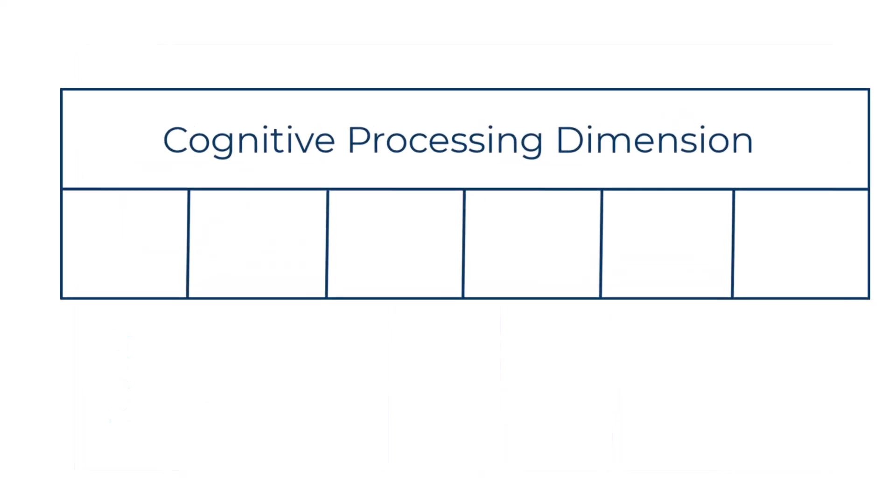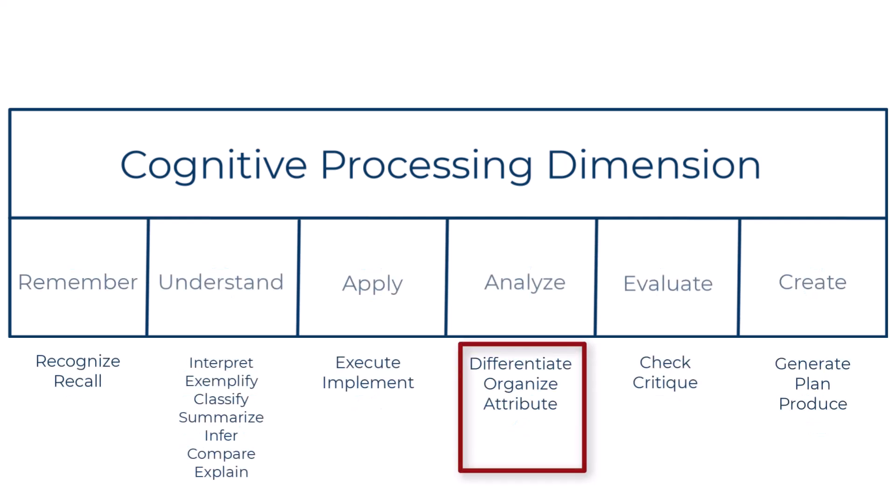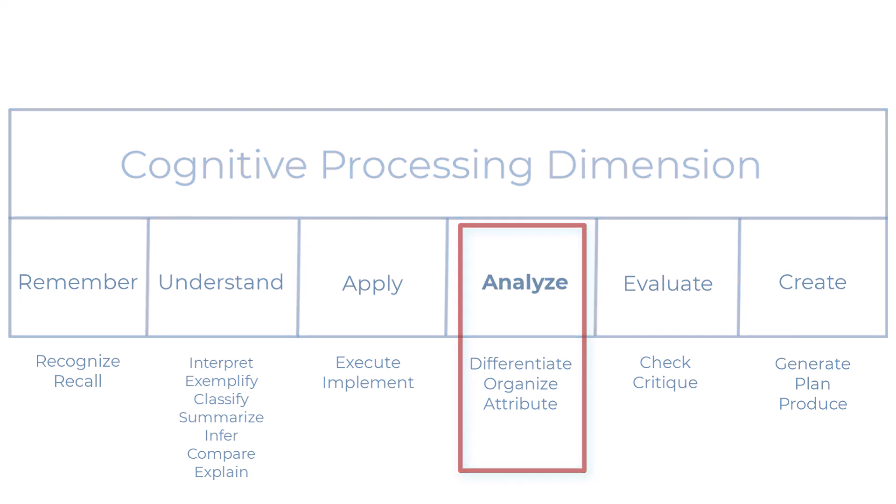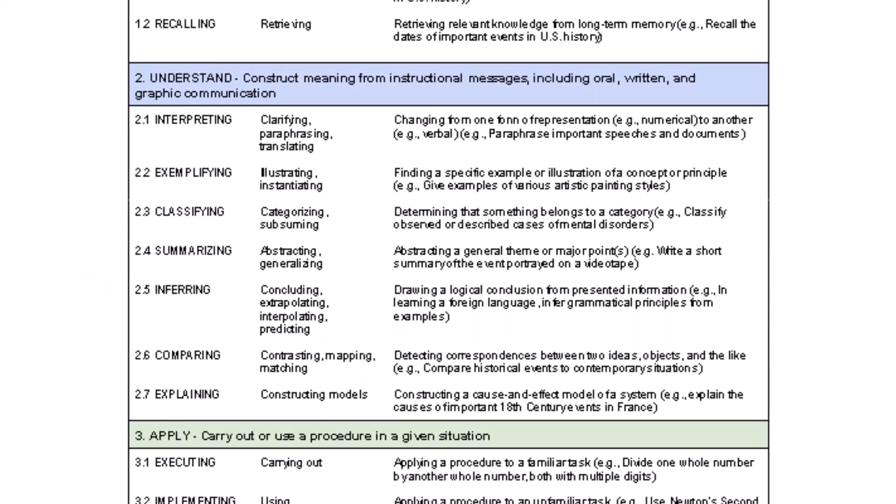Let's first break down the cognitive processing dimension. This consists of six levels, but each of these levels have subdivisions that help you identify more specific, measurable, and observable behaviors within that level of complexity. Please refer to the cognitive processing dimension handout for more in-depth explanations and examples of these subdivisions. Knowing them will really help you identify the processing level of your objectives.